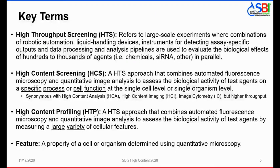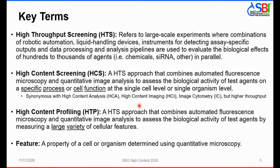I'd like to introduce some key terms to get us started. High-throughput screening refers to large-scale experiments where combinations of robotic automation, liquid handling devices, instruments for detecting assay-specific outputs, and data processing and analysis pipelines come together to evaluate the biological effects of hundreds to thousands of agents — whether chemicals, siRNAs, or others — in parallel. High-content screening is a high-throughput screening approach that combines automated fluorescence microscopy and quantitative image analysis to assess the biological activity of test agents at the level of the single cell or single organism. Synonymous terms include high-content analysis, high-content imaging, and image cytometry, but HCS typically denotes higher throughput.